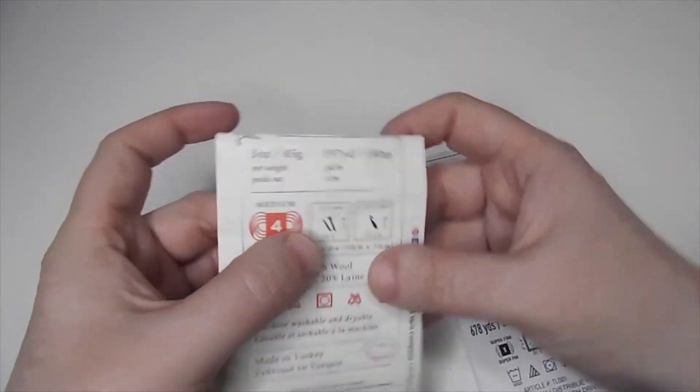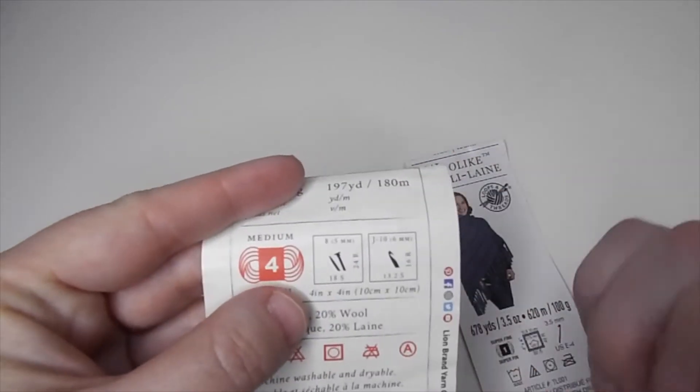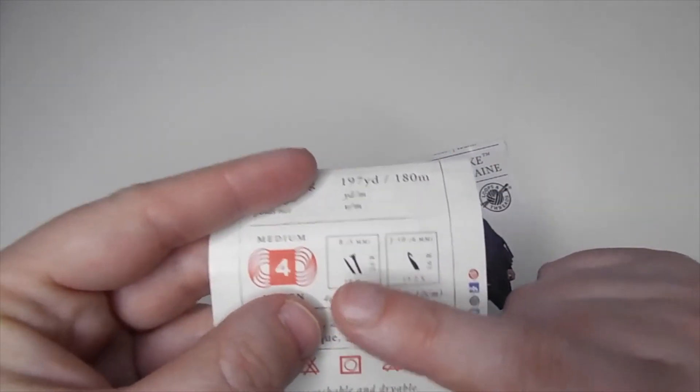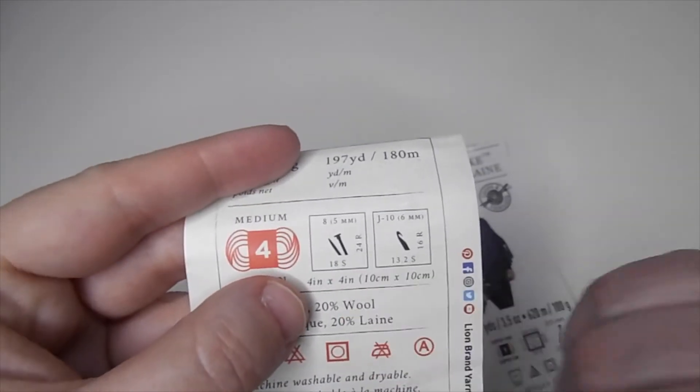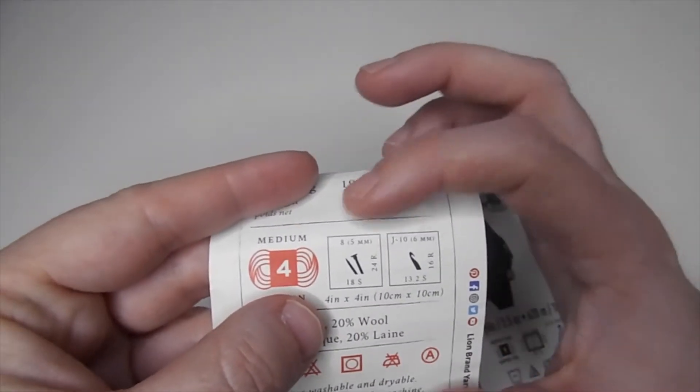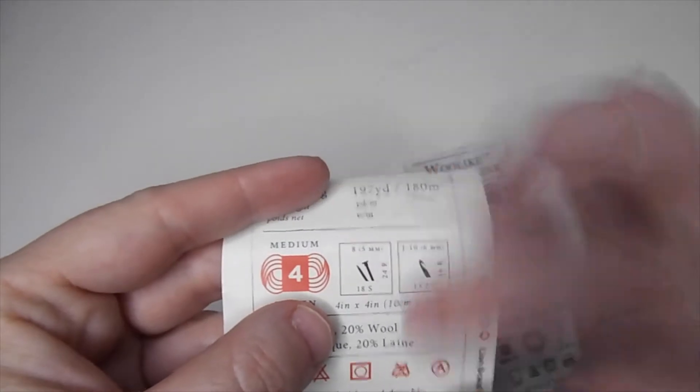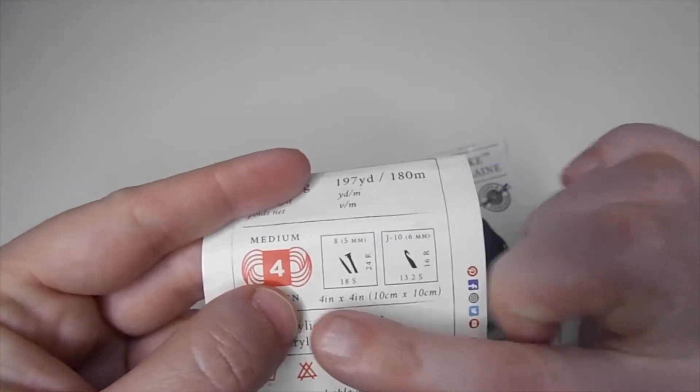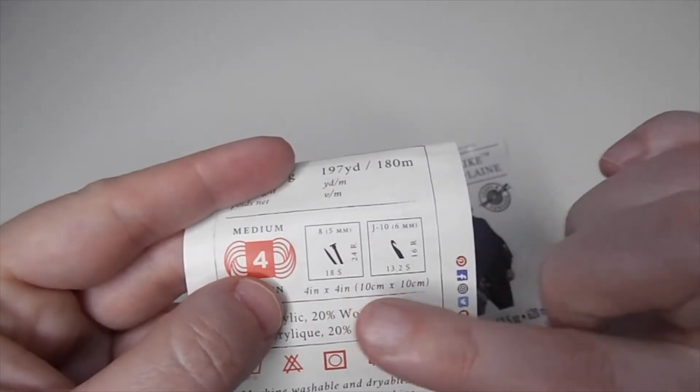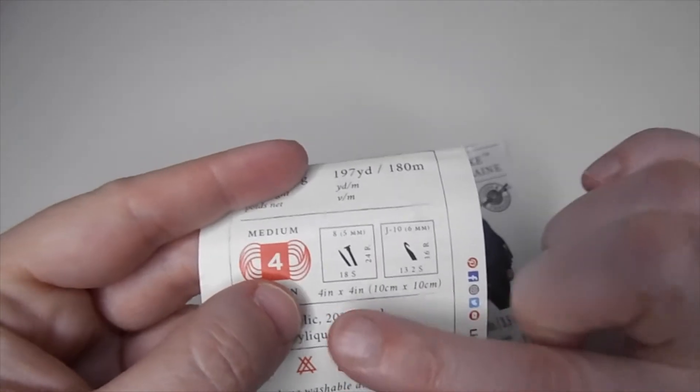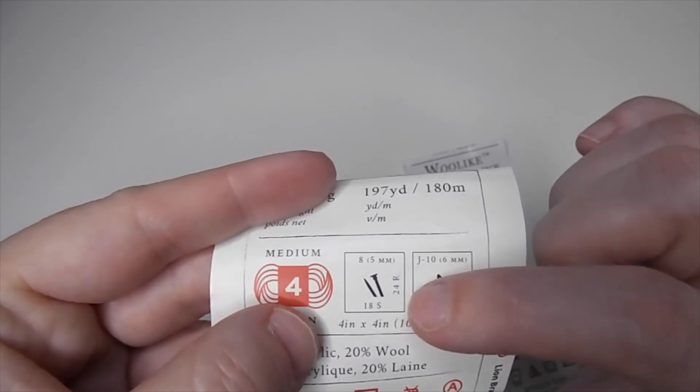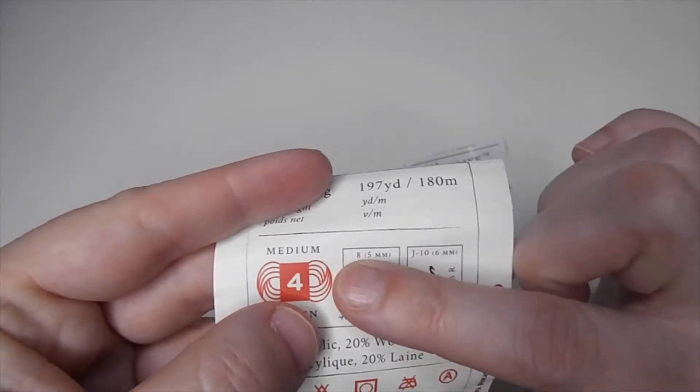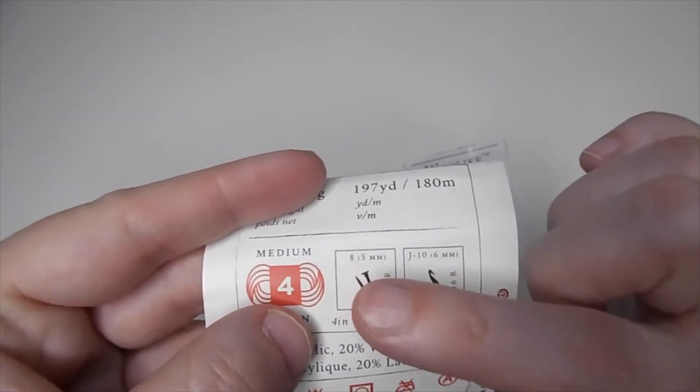Then you have this information, which is really important. You have those two signs. The first one is if you do a swatch 4 inch by 4 inch or 10 centimeters by 10 centimeters, you will need 18 stitches and 24 rows using US 8 or 5 millimeter needles for knitting.